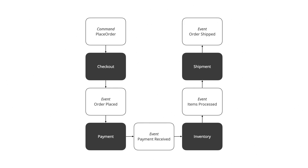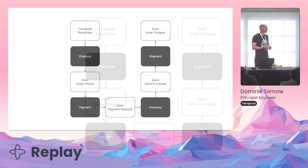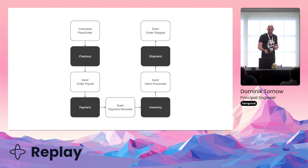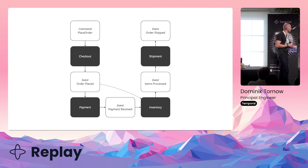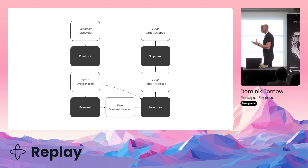Let's look at an event-based system. The user kicks off the process with a 'place order' command. That goes to the checkout service, which translates the command into an 'order placed' event. The payment service is wired up so that nobody is explicitly calling it — it just listens to 'order placed'. From there the payment service collects the payment and raises a 'payment received' event. The behavior of the business process emerges through the chain.